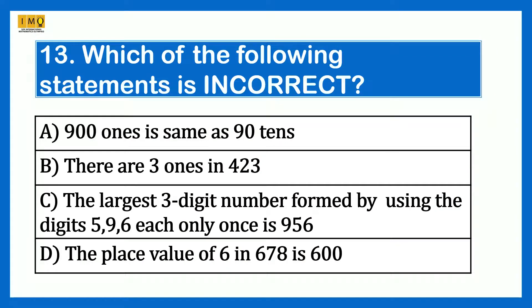Which of the following statements is incorrect? Option A: 900 ones is same as 90 tens — correct. Option B: there are 3 ones in 423 — correct. Option C: the largest 3-digit number formed using digits 5, 9, 6 each only once is 956 — incorrect. The largest number is 965, not 956. Therefore the incorrect statement is Option C.